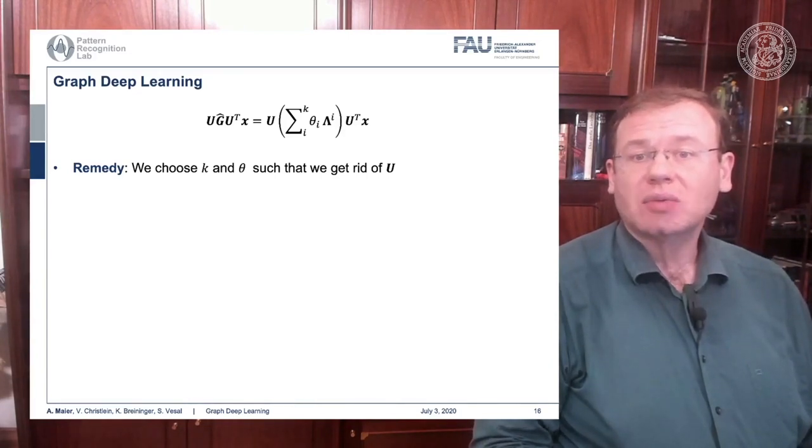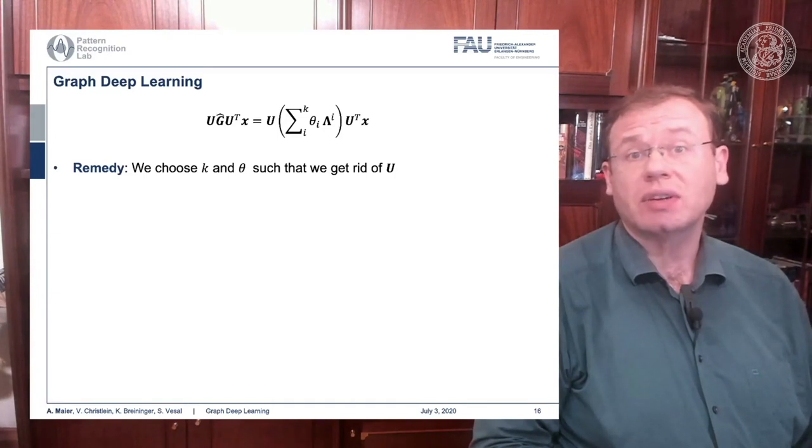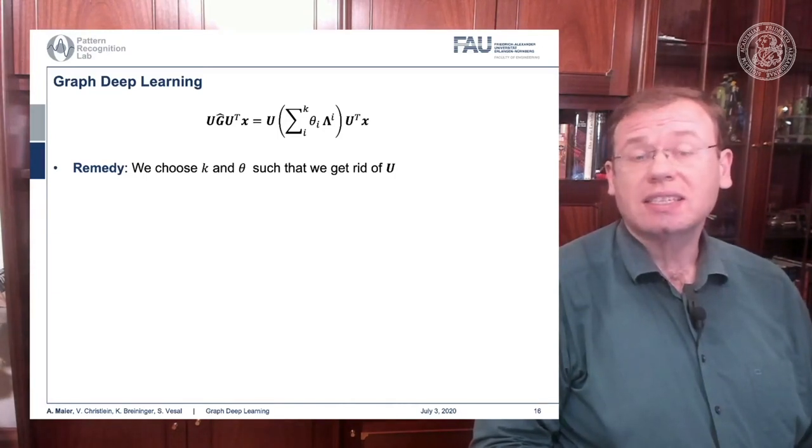This was very expensive because we have to compute U, and for U we have to do the eigenvalue decomposition for this entire symmetric matrix. We've seen that we can't use tricks of the fast Fourier transform because this doesn't necessarily hold for our U^T.